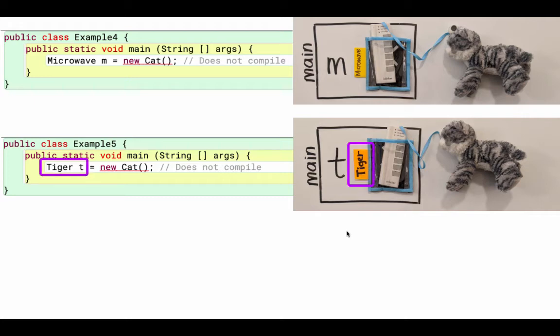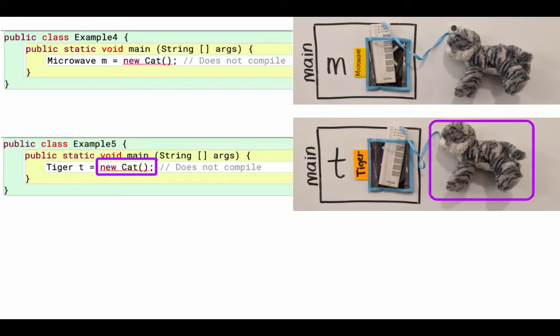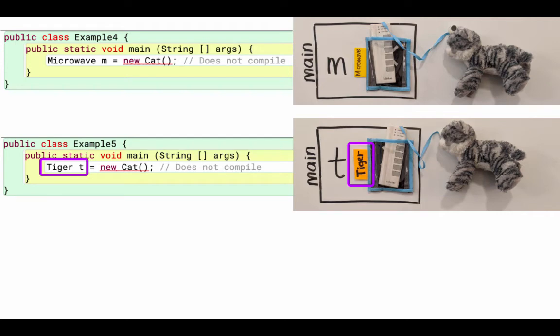My next example: a tiger reference is referencing a cat. This one also doesn't work. Remember, the tiger class has methods that its parent does not have — it added a swim method. And the cat object doesn't have a swim method. So I can't use a tiger reference, which would imply that I could call a swim method on the cat. The key thing is that the type of the object must be the same class or a subclass of the type of the variable; if not, the variable type would imply the object has methods it might not have.